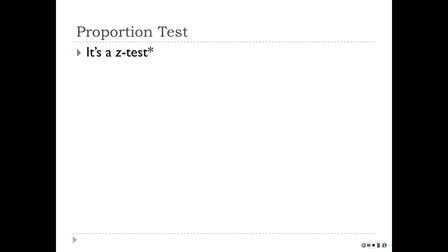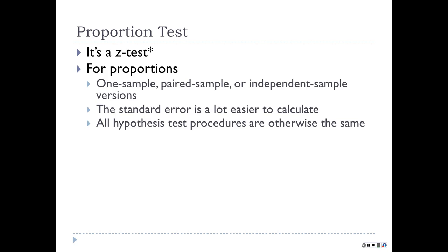So you can have a test for one proportion, which is like a single sample t-test or z-test, or a test for two proportions, which is like a two sample t-test or z-test. We're only going to talk about the independent samples type case here instead of paired samples. So it's just a z-test, and it's a test for proportions instead of means.